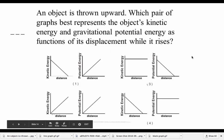This question, let's look at it. It says an object is thrown upward. Which pair of graphs best represents the object's kinetic energy and gravitational potential energy as functions of its displacement, which just means distance while it rises.